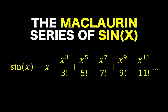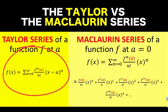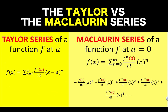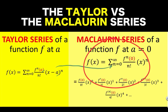We already showed the derivation of the Taylor series of a function f at a, and we said that the Taylor series is given by f of x equals the summation from n equals 0 up to infinity of f to the n-th prime of a over n factorial times the quantity x minus a raised to n, where this small n represents the order of the derivative. A special case of this Taylor series happens when a is equal to 0 — the resulting series is what we call the Maclaurin series, given by the summation from n equals 0 up to infinity of f to the n-th prime of 0 over n factorial times x raised to n.